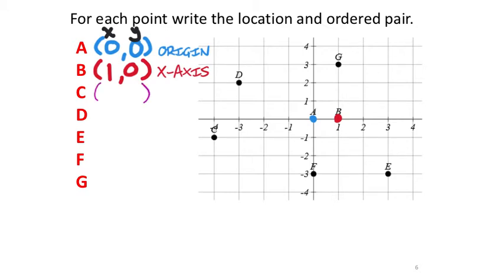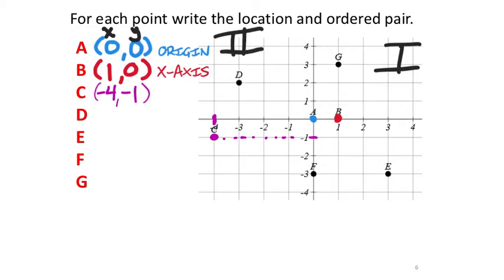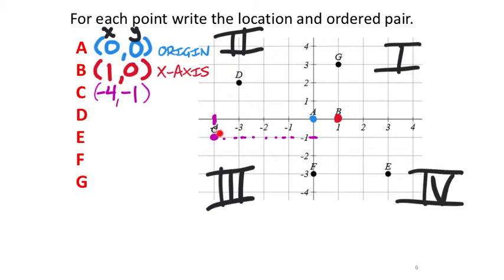Point C — its x value is negative 4 because it's to the left of zero. Following the line over to the y-axis, the y value is negative 1. Now, labeling the quadrants counterclockwise — 1, 2, 3, 4 — the ordered pair negative 4, negative 1 puts point C in quadrant 3.